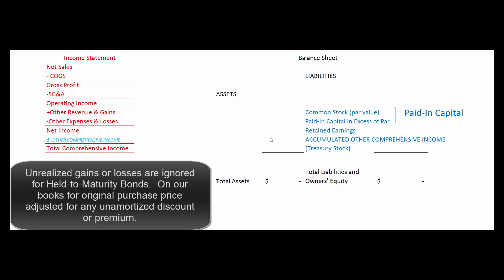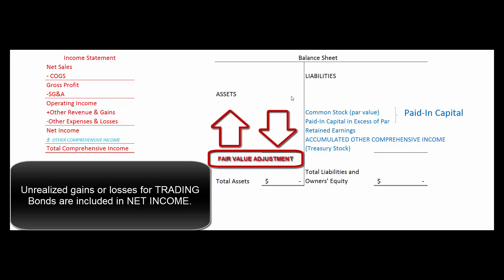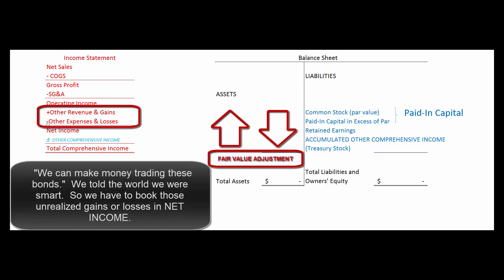When it comes to trading securities, we told the world we're smart and can buy and sell these bonds and make money — so we have to put our money where our mouth is. We'll write those bonds up or down on our balance sheet, probably in a separate account called fair value adjustment, to keep that number separate from what we originally paid. The offsetting debit or credit goes to other revenue and gains or other expenses and losses. So even if we haven't sold a bond and it's gone down in value, we decrease our net income — that loss must be included.